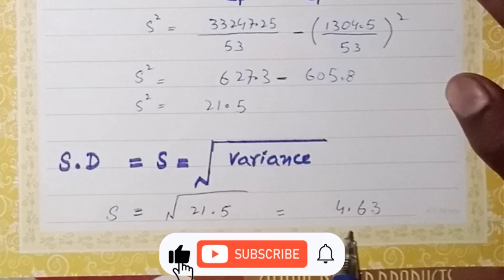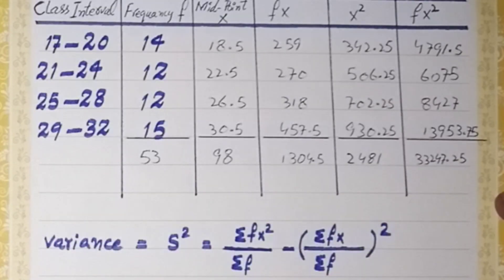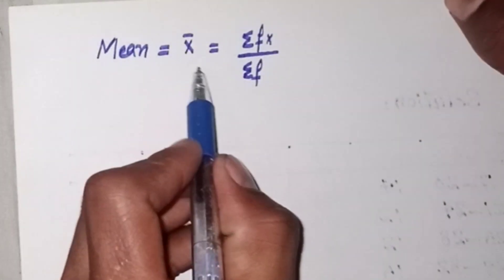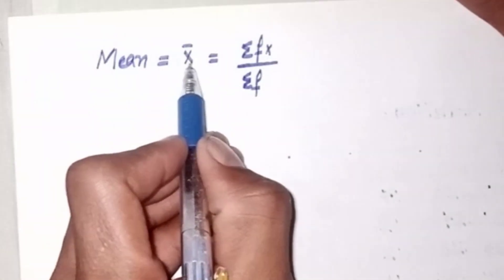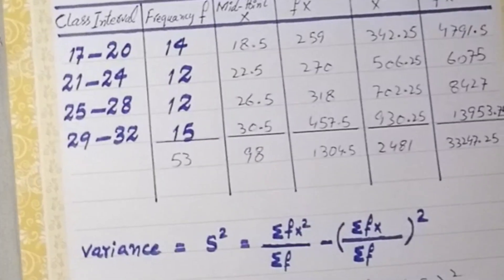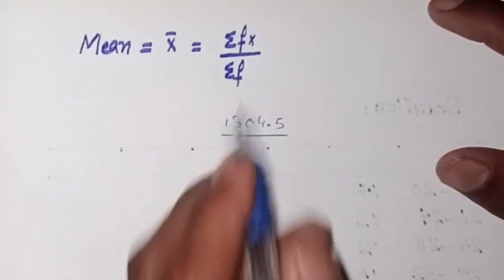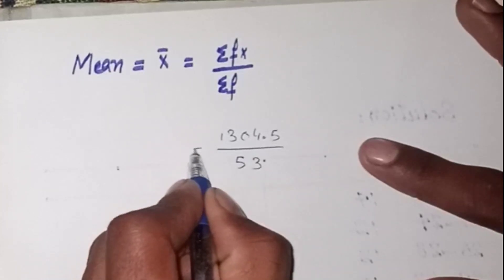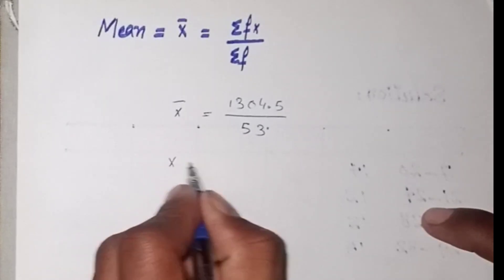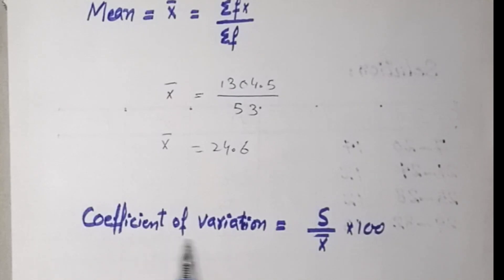Next, we calculate the mean value for this grouped data. The formula for the mean of grouped data is: mean (x-bar) equals sigma fx divided by sigma f. The sigma fx value is 1304.5 and sigma f is 53, so we divide 1304.5 by 53 and the mean value is 24.6.